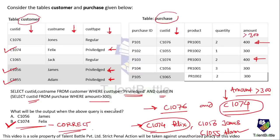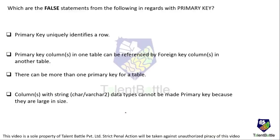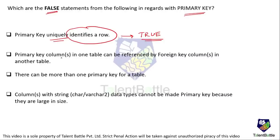Next question asks which statements are false regarding primary keys. Statement 1: a primary key uniquely identifies a row — this is true. Statement 2: primary key columns in one table can be referenced by a foreign key column in another table — this is also true, as this is normal relational database usage.